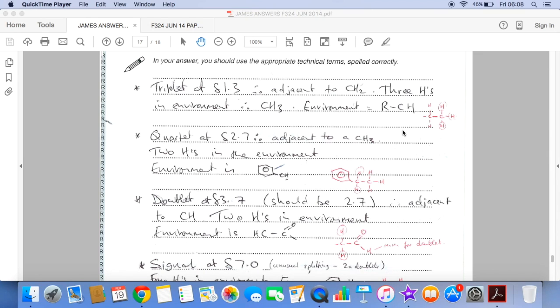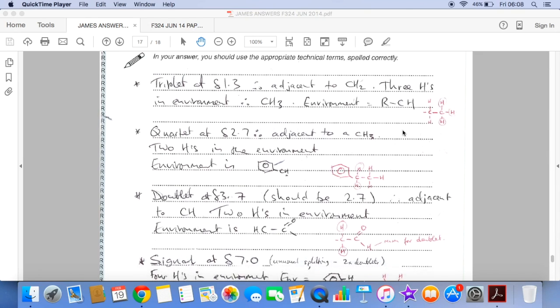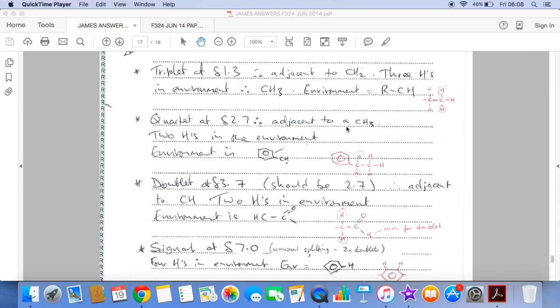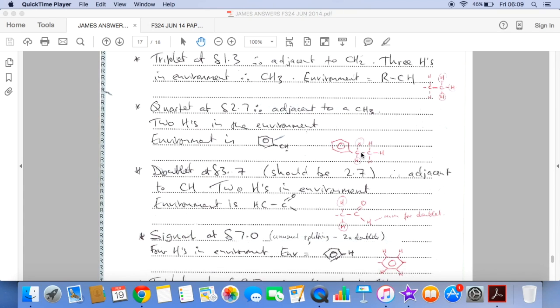So the quartet at 2.7. So the fact that it's a quartet means it's adjacent to a CH3. There are two hydrogens in the environment because its peak area is two. So you can see it kind of could link in with the one we've already identified. So the environment is a hydrogen bonded to a carbon that is then bonded to a benzene ring.